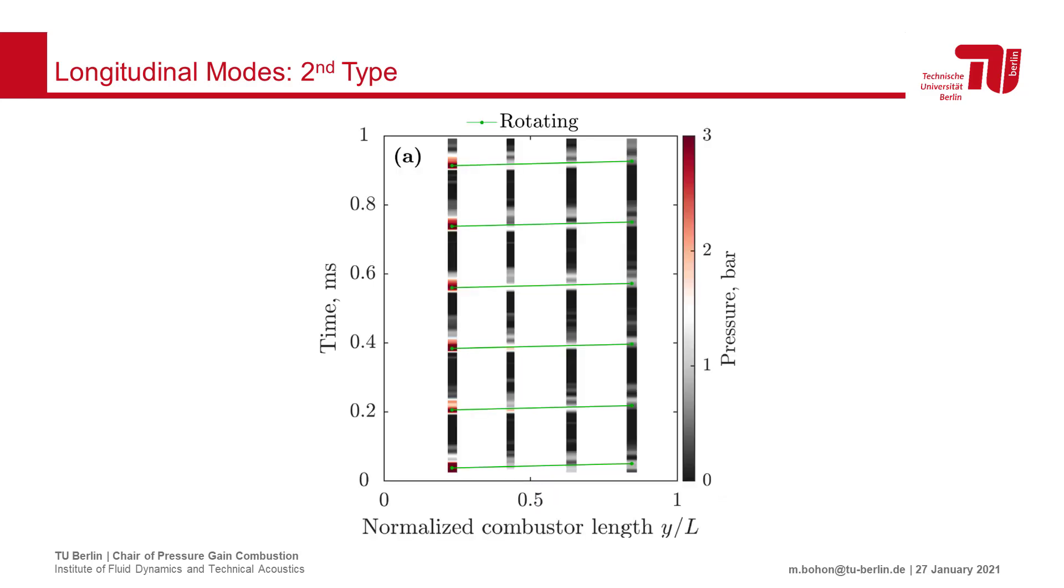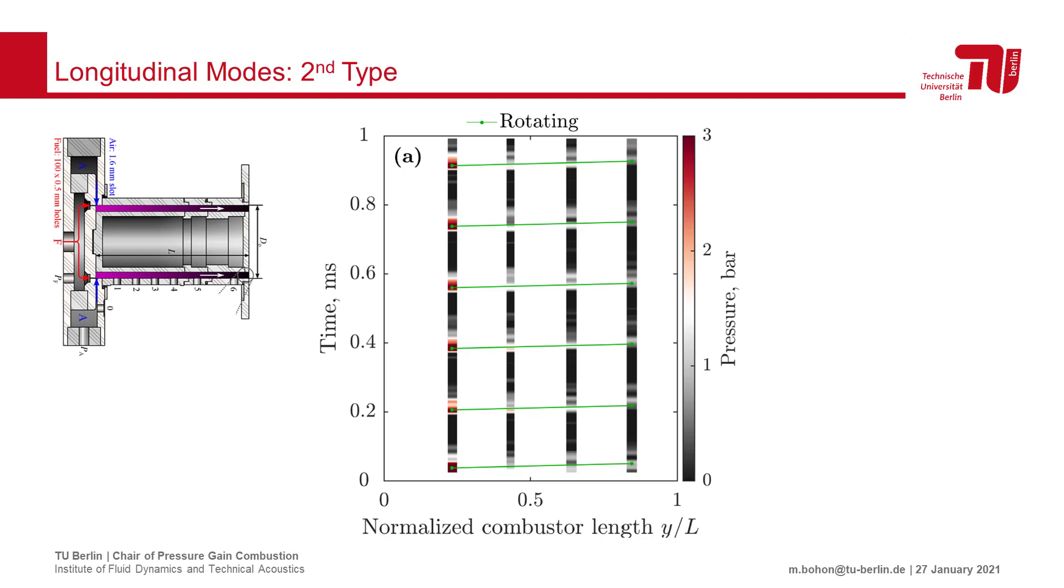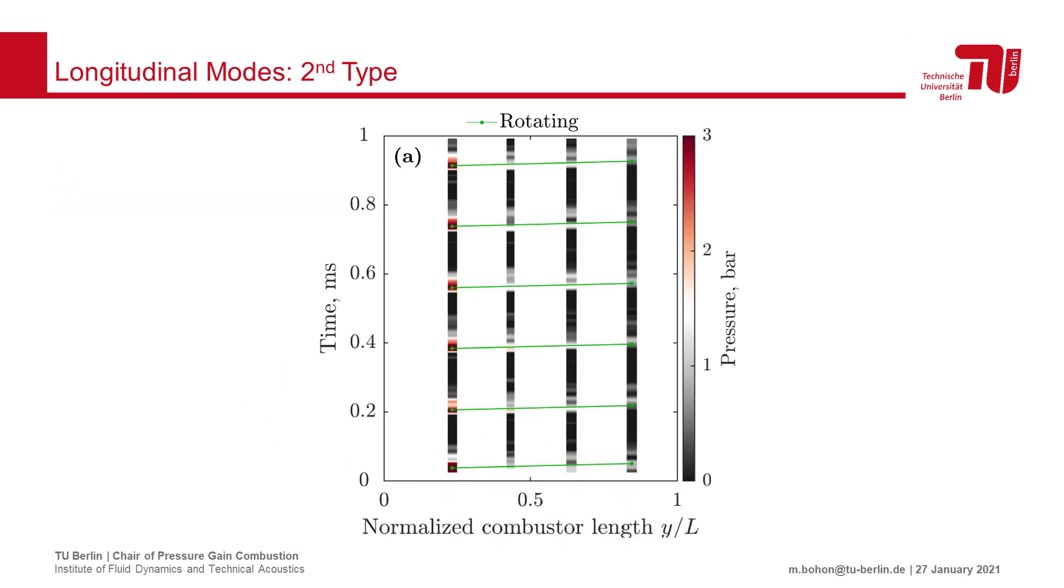To support this idea, we can observe the propagation of pressure waves down and around the combustor by distributing pressure sensors along its length. From these measurements, we build up a picture of the space-time pressure distribution in the combustor.